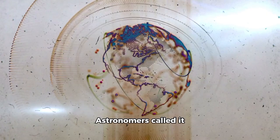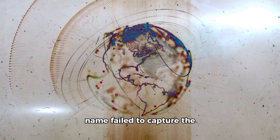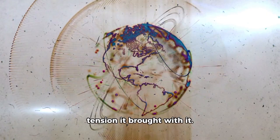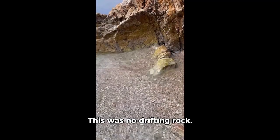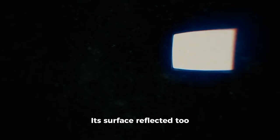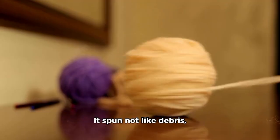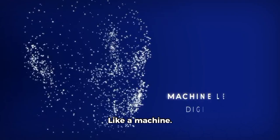Astronomers called it 3 Atlas, though the name failed to capture the tension it brought with it. This was no drifting rock. Its motion was too precise. Its surface reflected too much light for its size. It spun not like debris, but with intention. Like a machine.